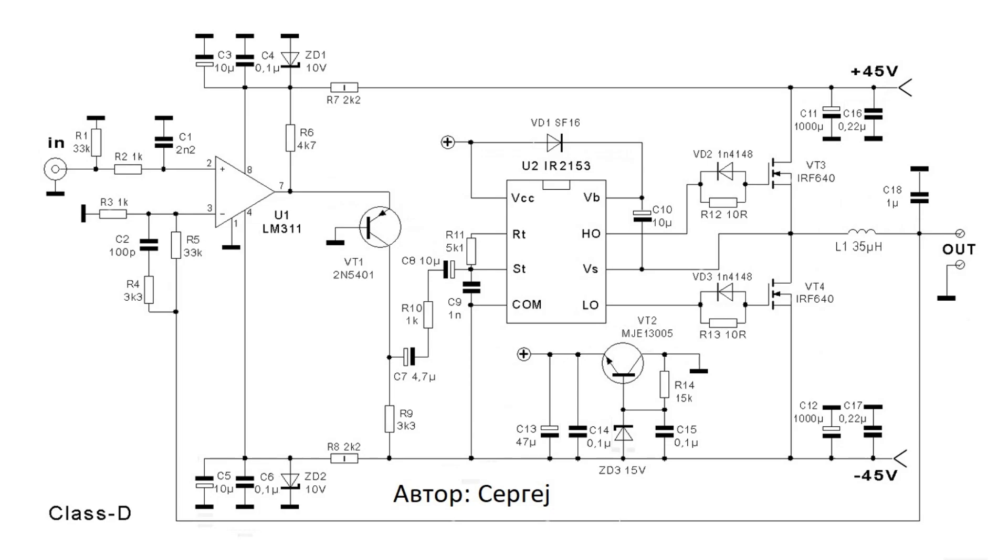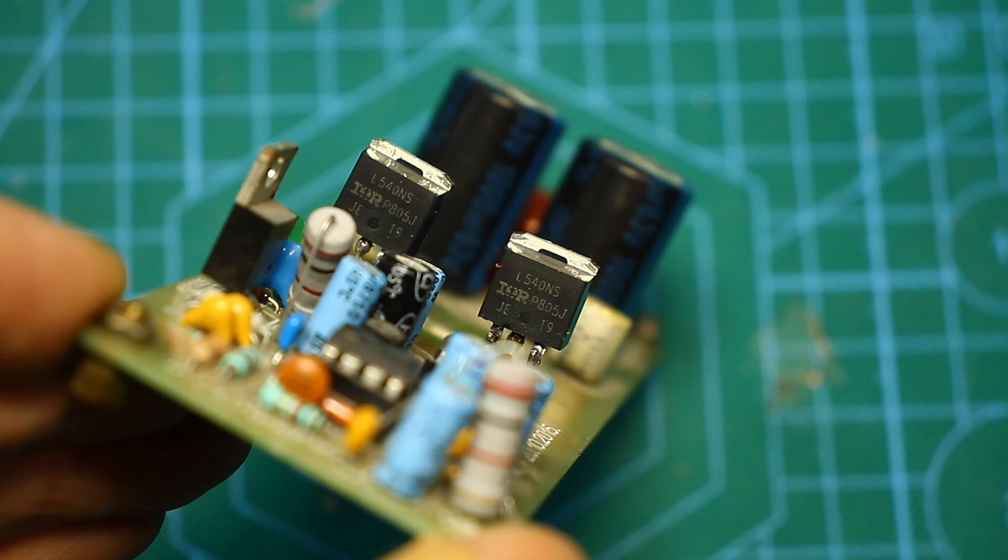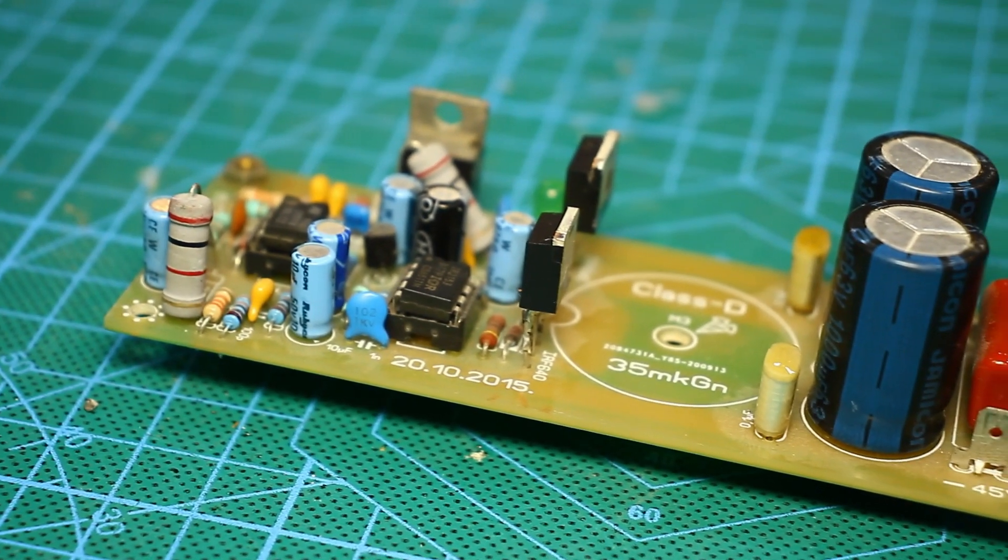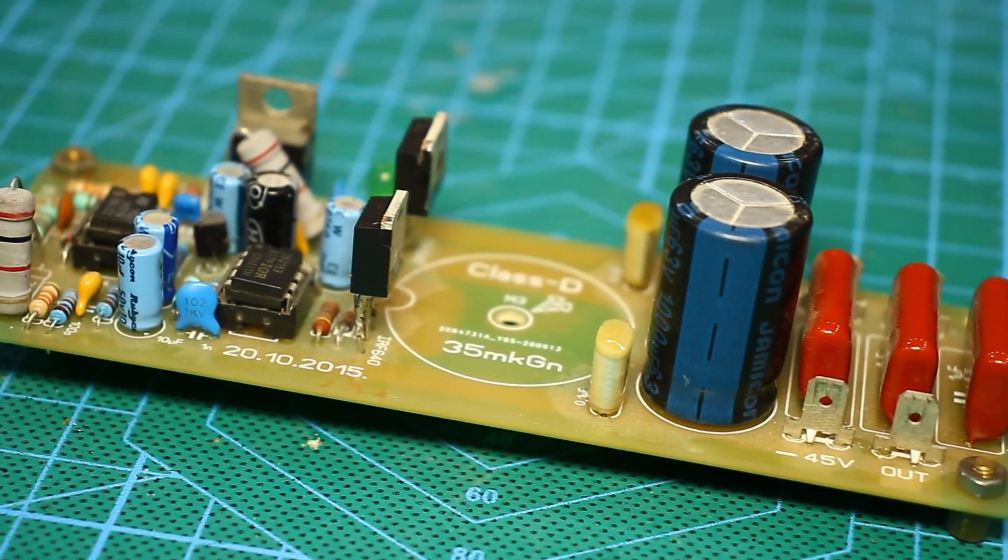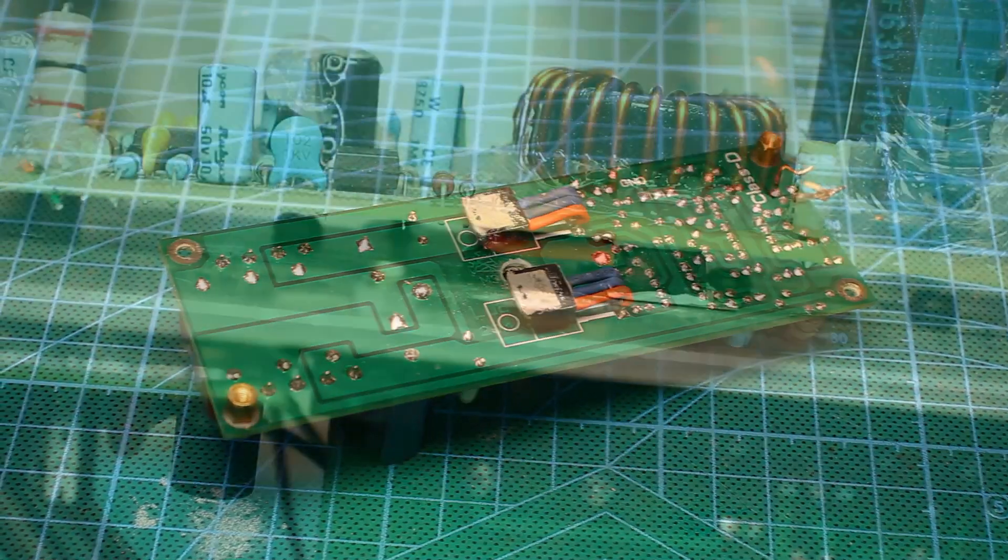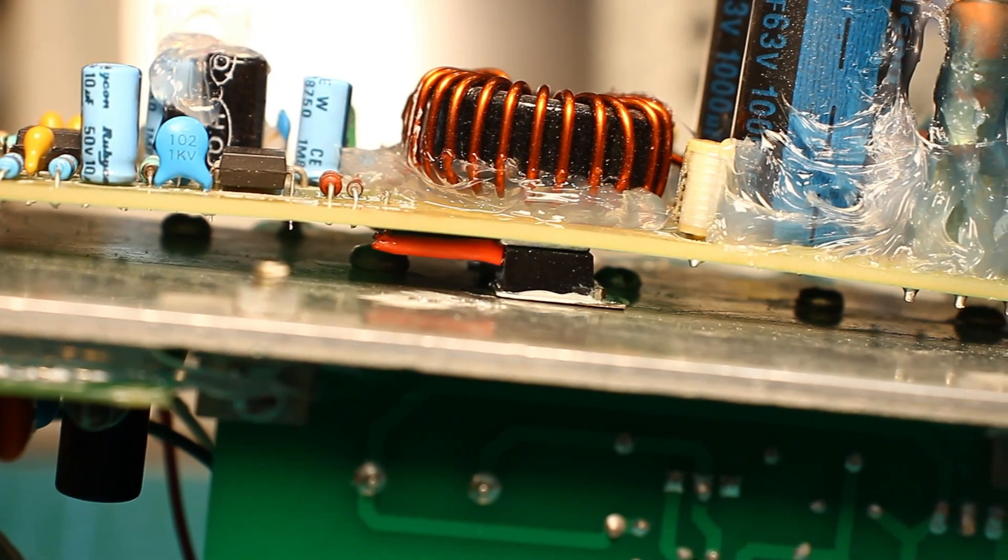Everything is done according to the scheme, with the exception of the power MOSFETs. I have IRF540 installed. These are surface mount MOSFETs, but nothing prevents lengthening the pins. The transistors are pressed against the radiator with a metal strip. Of course, both are isolated from the heat sink by a heat conducting gasket.